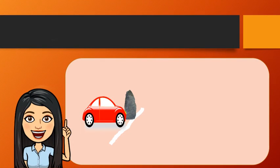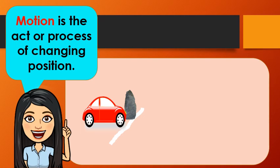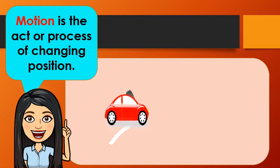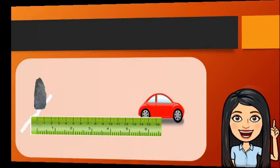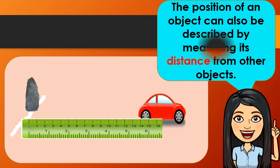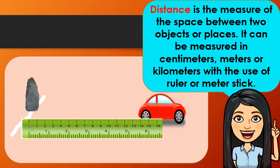Now, let's define what motion is. Any idea? Motion is the act or process of changing position. Observe the toy car. Do you think it is in motion? It is in motion because it changes its position.